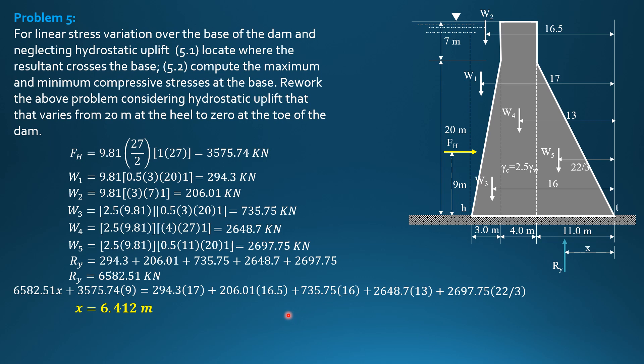E is B over 2, 18 over 2 minus X. You can use the formula for Q because R-Y over B quantity 1 minus plus 6E over B. And E is 18 over 2 or 9 minus 6.412, so E is 2.588 meters. Substitute there.